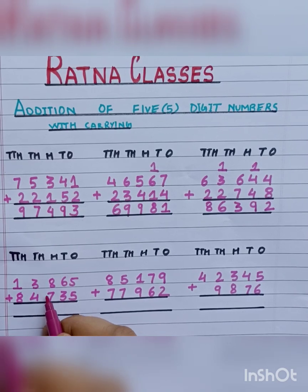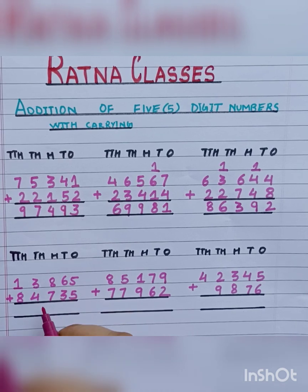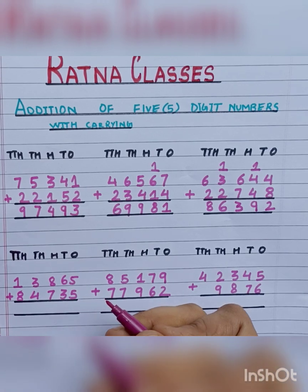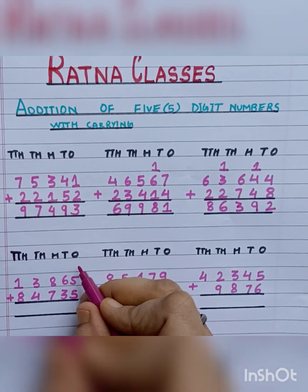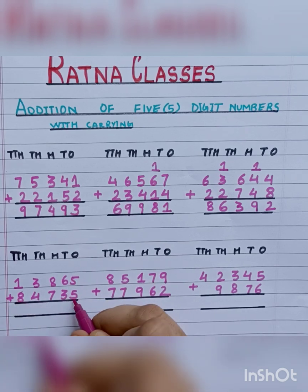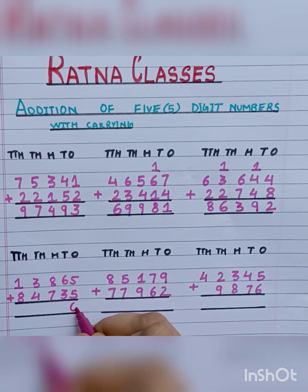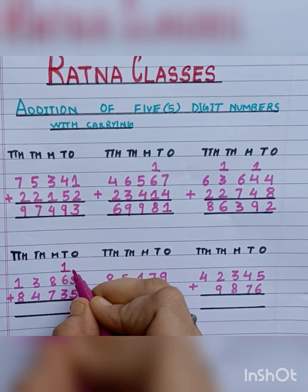Let's move to the next sum: 13,865 plus 84,735. First of all, we will add the digits on the ones place — 5 plus 5 is 10. So we will write 0 here and carry 1.